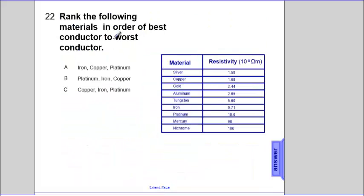So in this problem, we're going to rank the materials in order from best conductor to worst conductor. And if you look, we deal with iron, copper, and platinum. Platinum, iron, and copper. Copper, iron, and platinum. So we're going to deal with these: copper, iron, and platinum. So we'll draw dots next to these just to keep track.